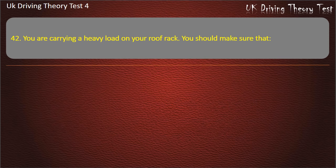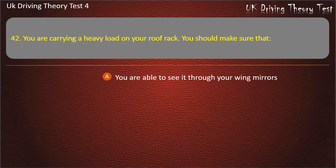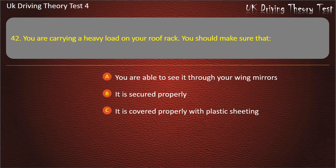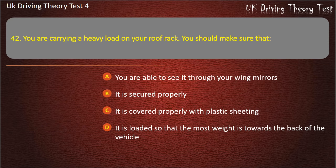Question 42. You are carrying a heavy load on your roof rack. You should make sure that: you are able to see it through your wing mirrors; it is secured properly; it is covered with plastic sheeting; or it is loaded so that the most weight is towards the back. Answer: It is secured properly.